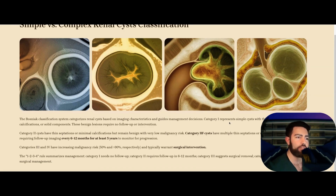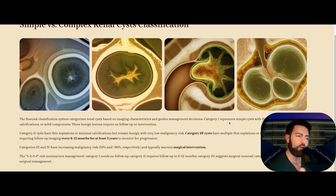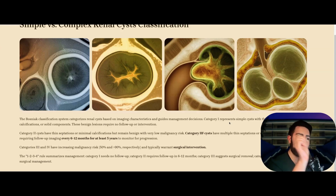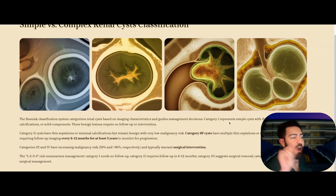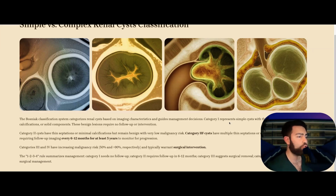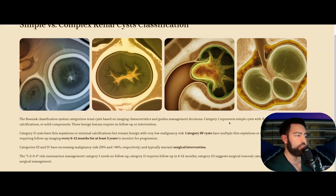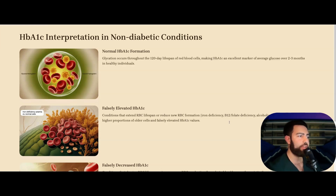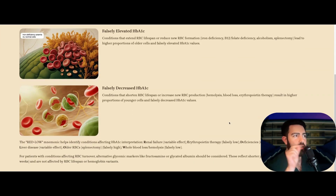Simple versus complex renal cysts — Bosniak classification. Category 1: simple thin-walled, no septation, no solid component or calcification — no follow-up needed. Category 2: thin septations, minimal calcifications — generally low risk. Category 2F: multiple thin septations or minimal wall thickening — requires imaging every 6 to 12 months for at least 5 years. Categories 3 and 4 have increased malignancy risk: 50% for category 3, greater than 90% for category 4 — surgical intervention is indicated, especially for category 4.